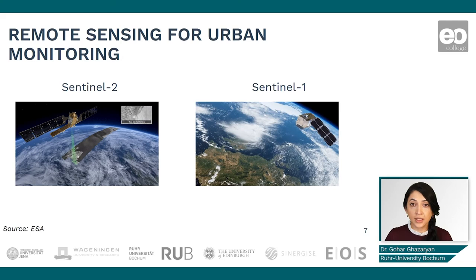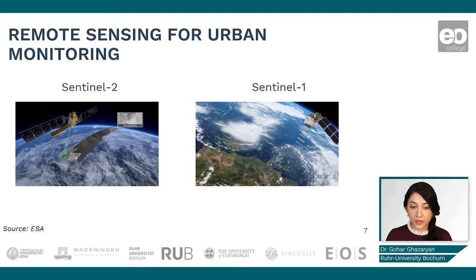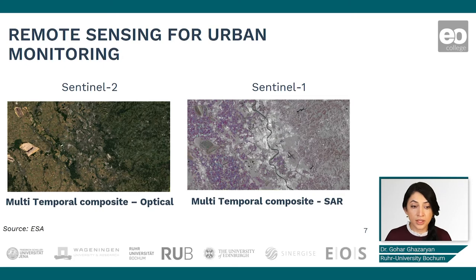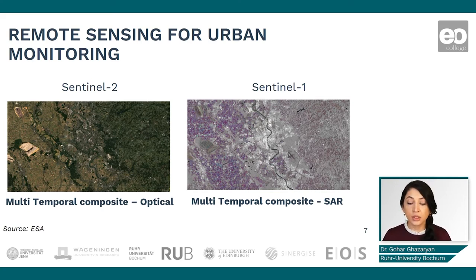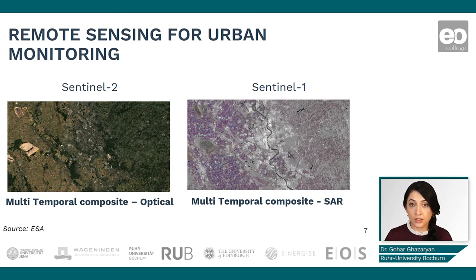Although different datasets from different sensor systems provide different information, they can be used complementarily. Here we can see examples of data from Sentinel-2 and Sentinel-1. On the left we can see a multi-temporal composite based on multi-spectral Sentinel-2 data, and on the right a multi-temporal composite over the same area based on radar data. These images look different but give complementary information and can be used together or independently for mapping and identifying urban areas and monitoring changes.